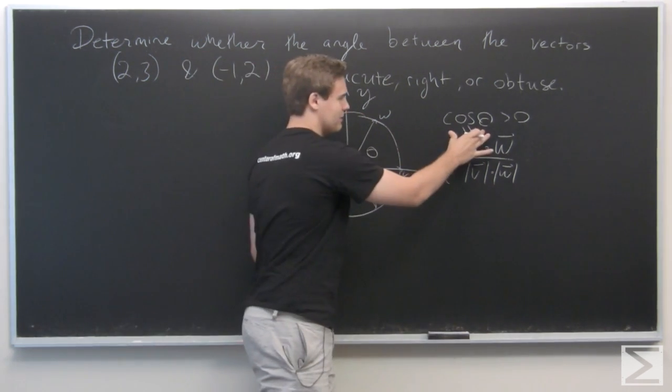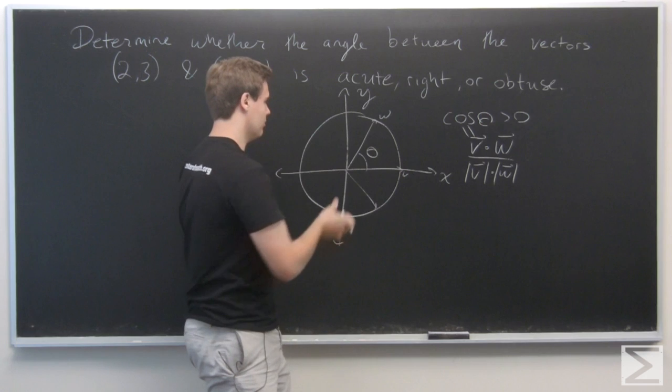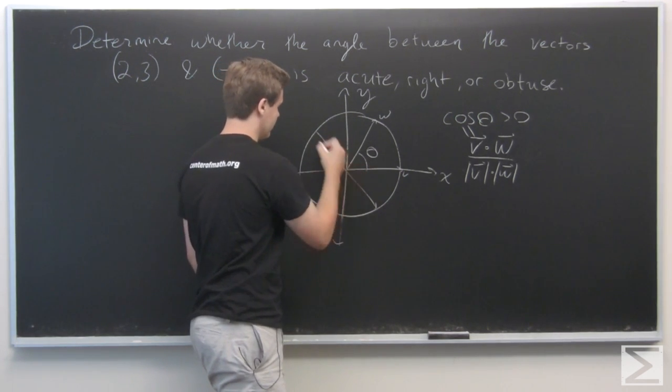So when cosine theta is positive, this angle is acute, and when it is negative, that is, the angle, say, is over here,